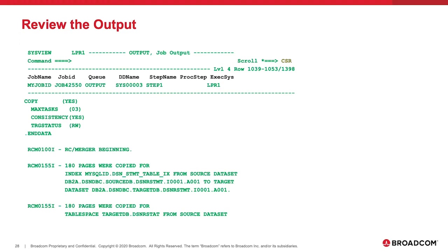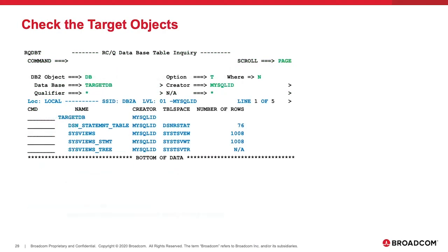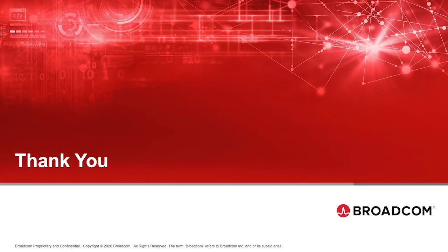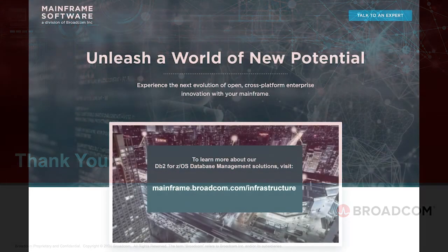Finally, if everything has been successful, the run stats updates are made to the catalogue using the SQL updates that were generated. If we switch into RC Query, we can see that the tables have indeed been created and populated, including the stats copied across from the source to the target objects. We can double check by displaying the objects that everything is indeed in read-write mode, and these objects are ready to be used. Thank you for watching this short video on cloning DB2 structures and data using CA-RC Merger.